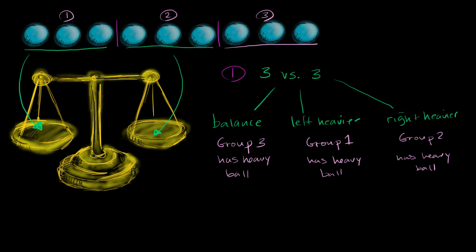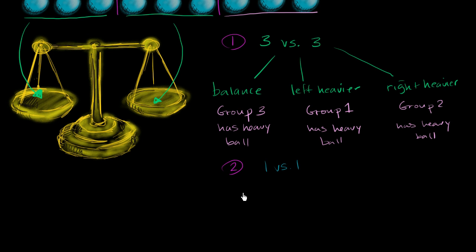So if I have three balls, what I could do is—my step two—I now weigh one versus one. And once again, I have the outcomes. If they are balanced, then that means...